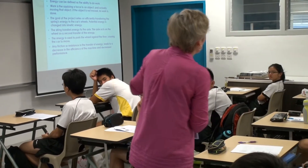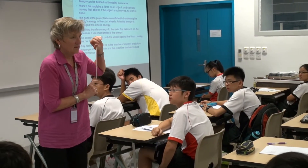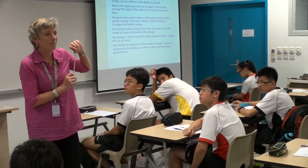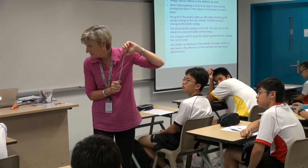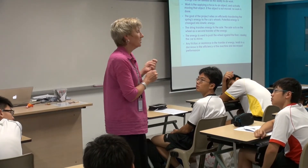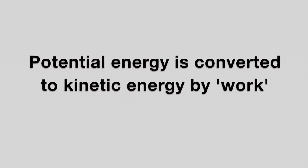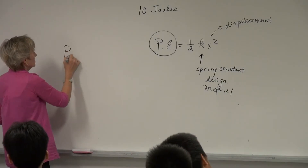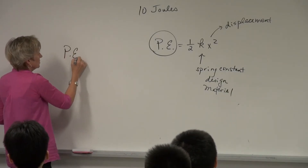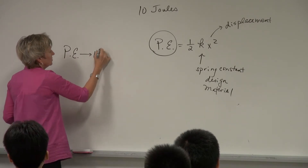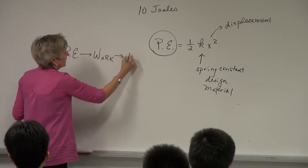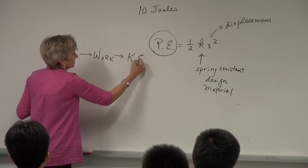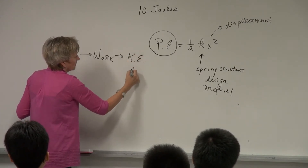How do you know this has potential energy? What does that potential energy mean? It's stored energy, okay? We have potential energy from the spring, we need to do some work, and then we will have kinetic energy in the fall, right?